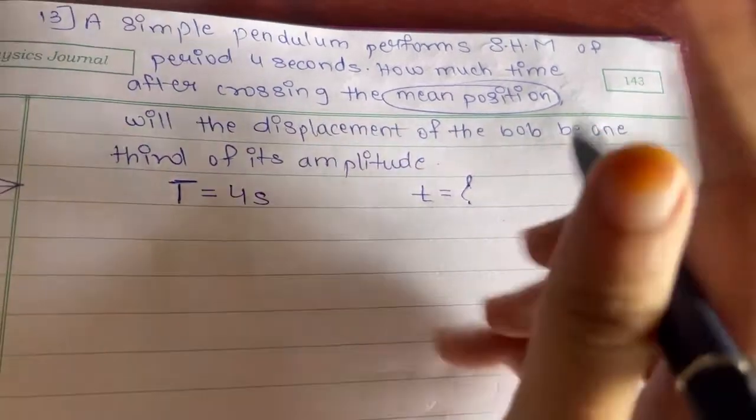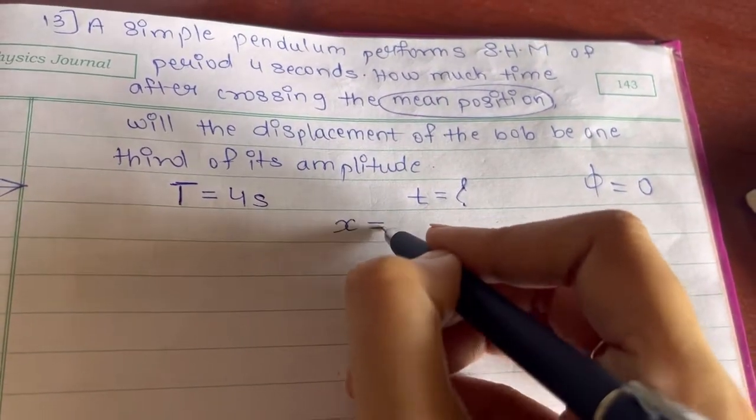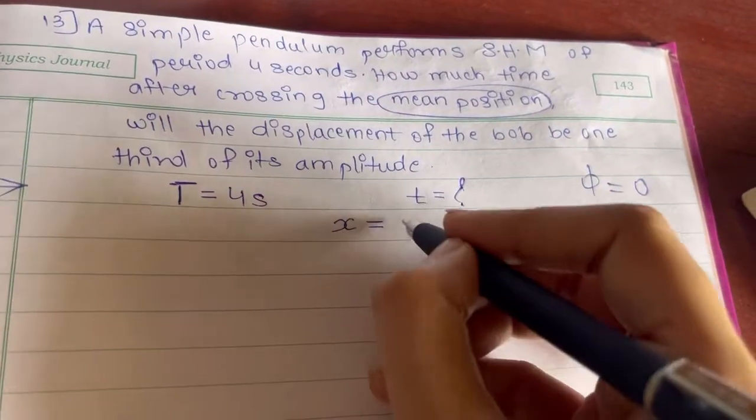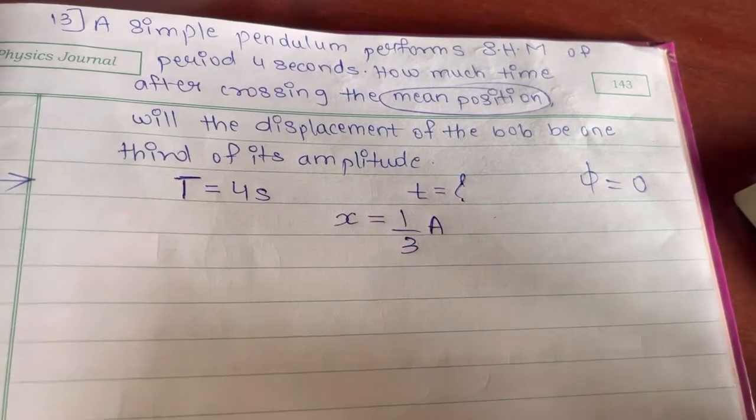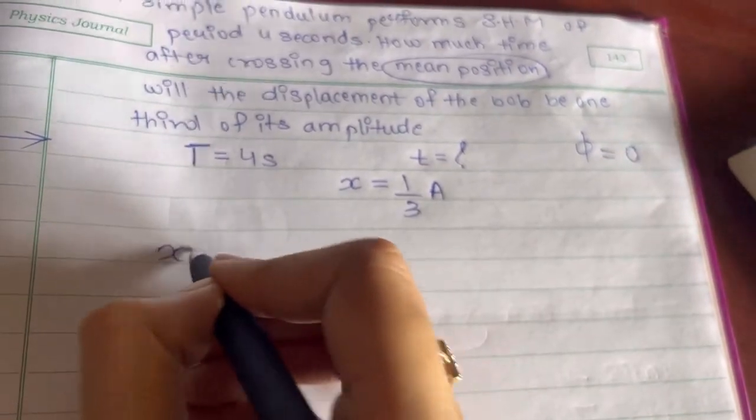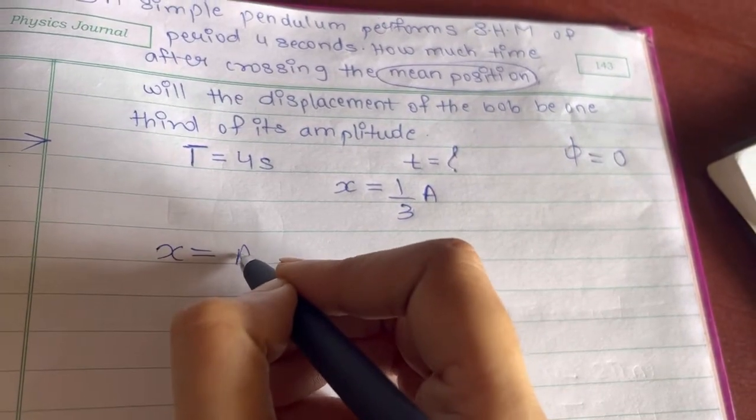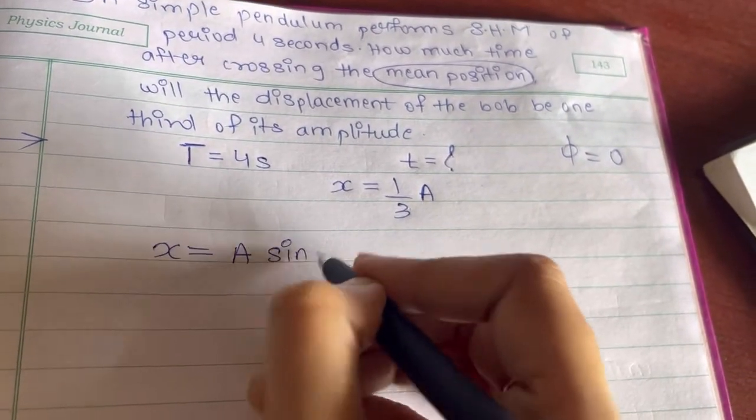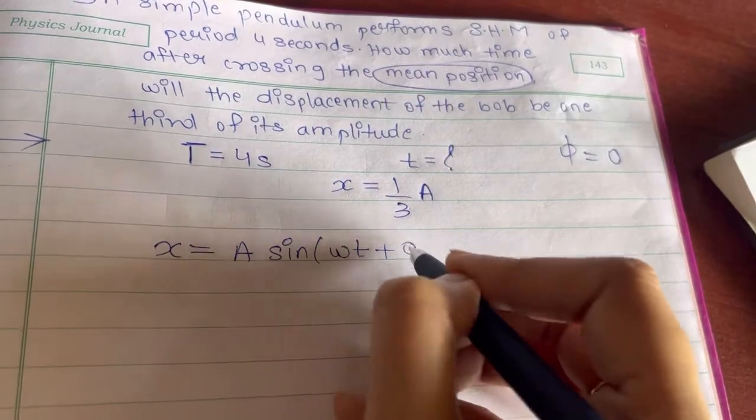The displacement of the bob, that is x, will be one third of its amplitude. This is the condition given to you. So first you will have to find the formula of displacement, that is A sin omega t plus phi.